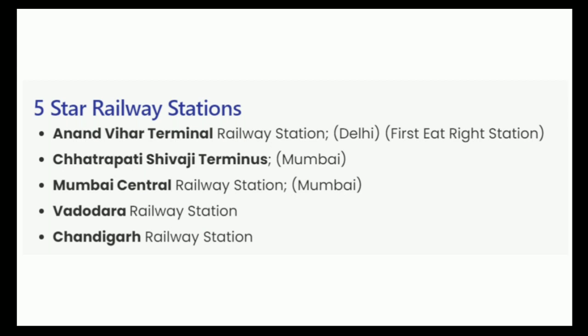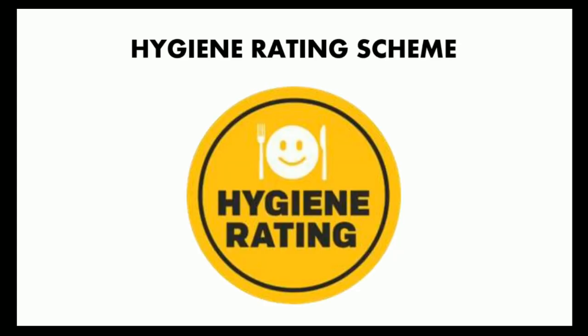Five railway stations have been certified under this scheme so far. The first Eat Right Station was Anand Vihar Terminal Railway Station in New Delhi. Then we have Chhatrapati Shivaji Terminus Mumbai, Mumbai Central Railway Station, Vadodara Railway Station in Gujarat, and Chandigarh Railway Station — being the latest to receive this certification. Currently we have these five Eat Right Stations.